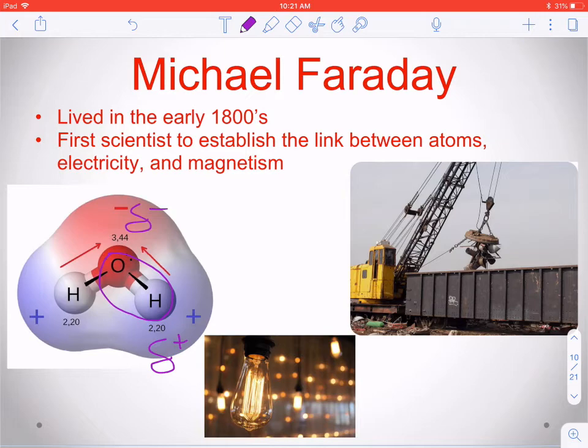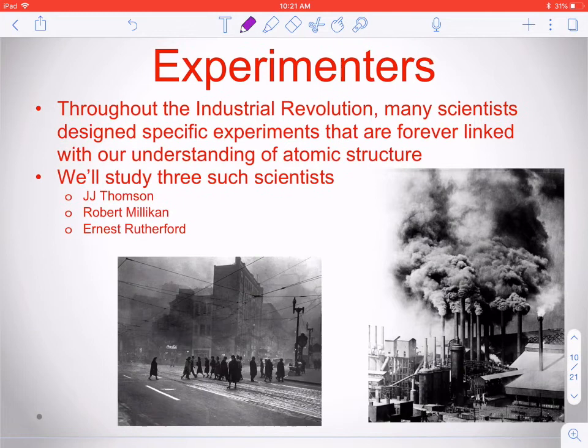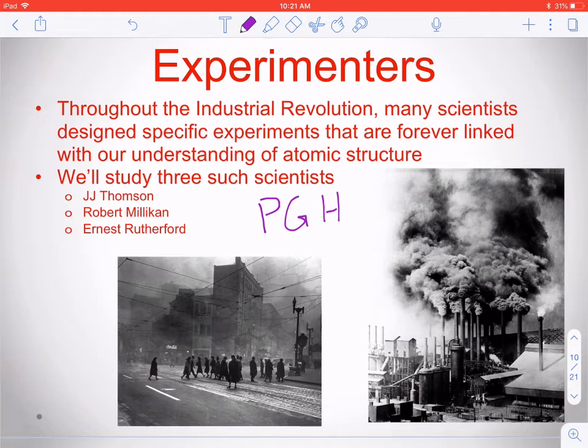Now let's talk about some of our experimenters, who are more around the Industrial Revolution era. They have specific experiments associated with their names, and sometimes specific models of the atom too. For time context, there's a picture of Pittsburgh taken around noontime during that era — you can see what color the sky is. It's a little crazy to think about the pollution that was around in Pittsburgh back then.